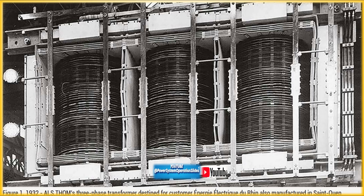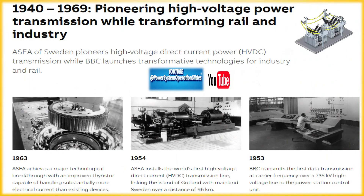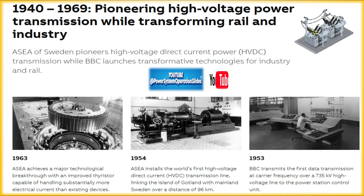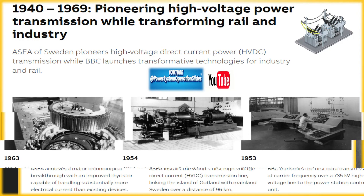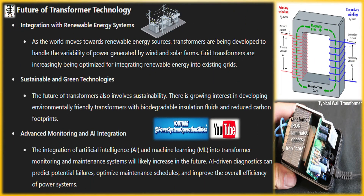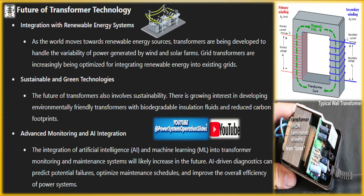By 1892, Charles Steinmetz's work on hysteresis losses in magnetic materials allowed for significant improvements in transformer efficiency, and the introduction of three-phase AC systems further revolutionized power distribution. The 1893 Chicago World's Fair showcased the Westinghouse-Nikola Tesla AC power system, demonstrating the viability of AC for lighting and power transmission. In Sweden, a three-phase AC line connected a hydroelectric project to a nearby town, marking another milestone in electrical technology.